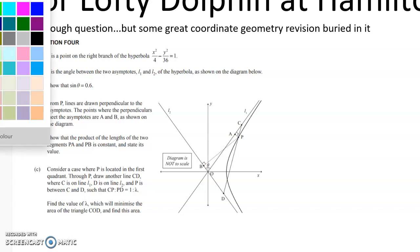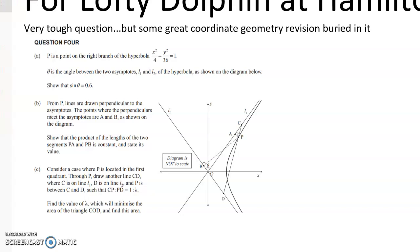So this is how it goes. One of the hardest things I think in this question is to see what we don't need for each part. The first thing we've got is a hyperbola and P is a point on the right-hand branch of this hyperbola. We're given in part A an angle that is angle theta, and we have to show that sine of theta is 0.6. That's not too bad at all. I might video that tomorrow but I probably don't need to.